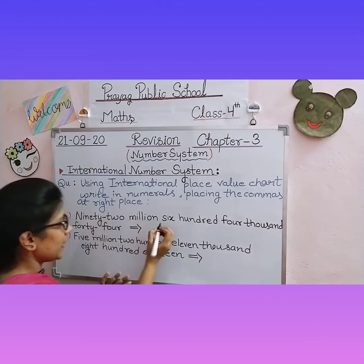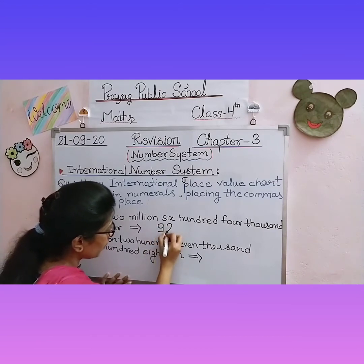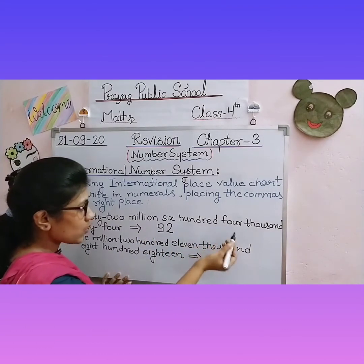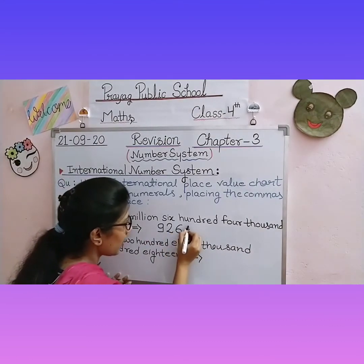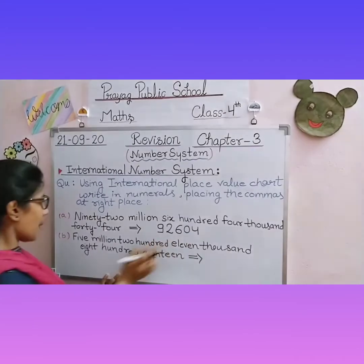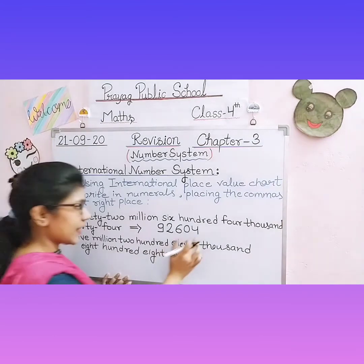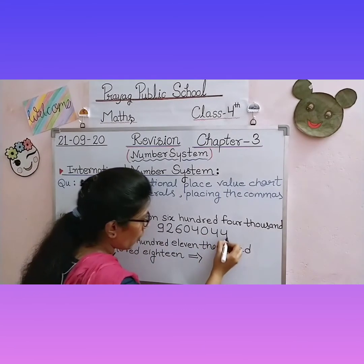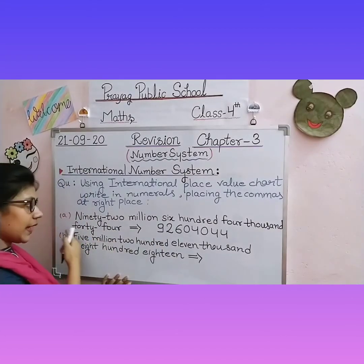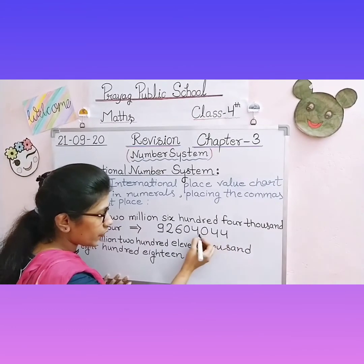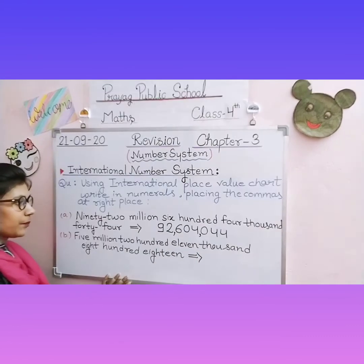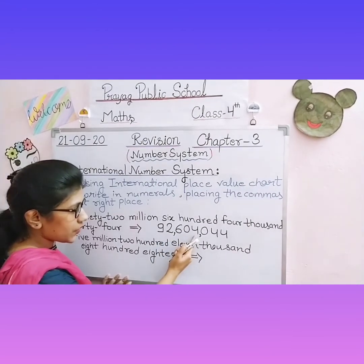Question number 1: ninety-two million, six hundred four thousand, forty-four. First write it in numeral form, then place the commas. 92,000,000 — first write 92. Then six hundred four thousand — write 604. Then forty-four, but there is nothing in the hundreds place, so we write 044. Now place the commas: ones, tens, hundreds — thousands, ten thousands, hundred thousands — millions. The result is 92,604,044.